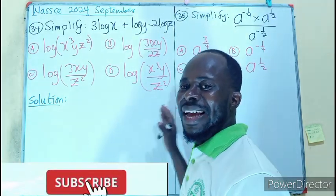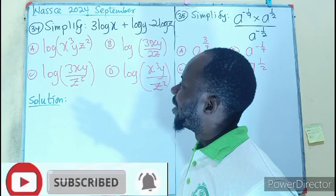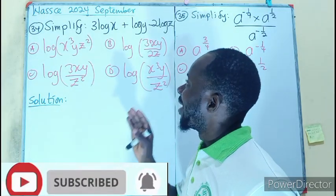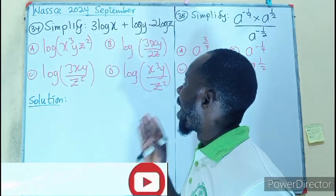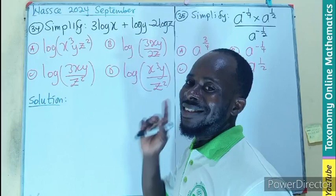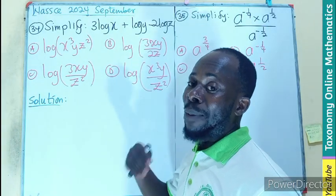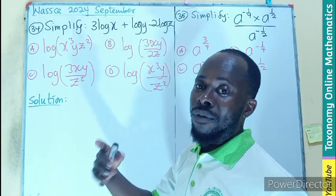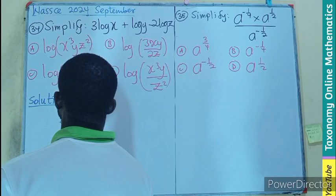This is logarithm and this is indices. Simplify 3 log x plus log y minus 2 log z. Now this is just application of the laws of logarithm. So let's begin with that.